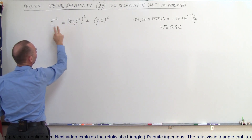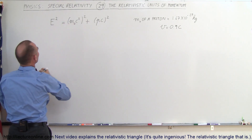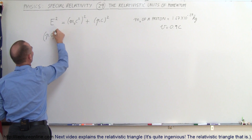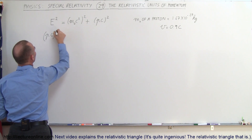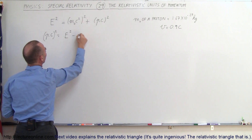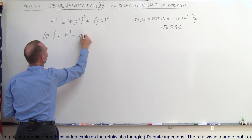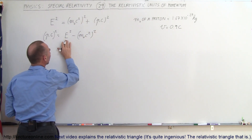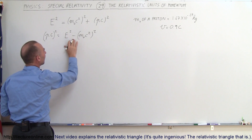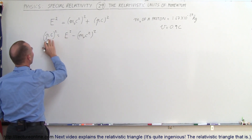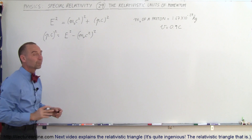We're going to move this to the other side and switch the equation around. So we can write PC quantity squared is equal to the left side, which is the total energy squared minus M-sub-naught C squared, quantity squared. So the total energy squared minus the rest mass energy squared equals the momentum times the speed of light, quantity squared.